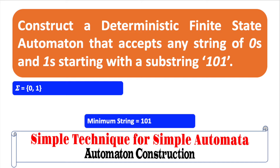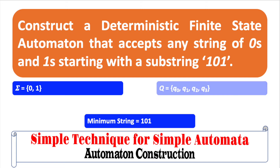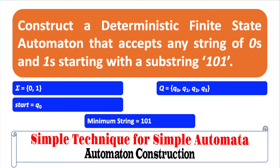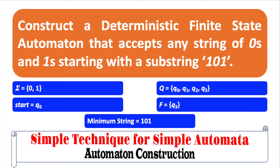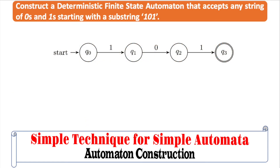It is because the string itself, 101, starts with the substring 101, even though it is an improper substring. So let us construct this minimum requirement first. Since this minimum substring 101 contains three input symbols, then we can construct an automaton with four states only. Let us designate q0 as the starting state and q3 as the final state. Now we have this simple automaton as shown on the screen. The final state is shown as a node with a double circle.